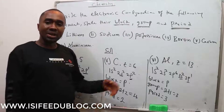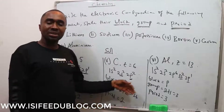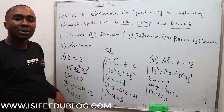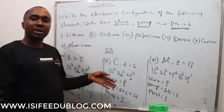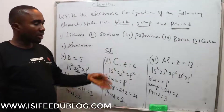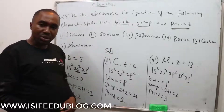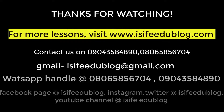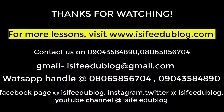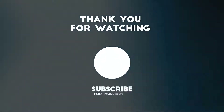That is how to find the electronic configuration, block, group, and period. For other questions and answers, you can see them in the exercise session. Thank you very much.